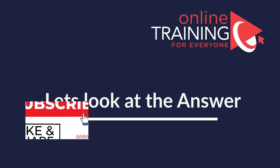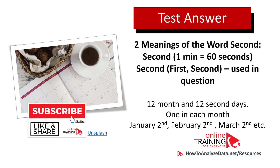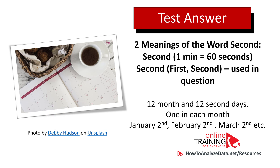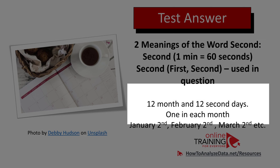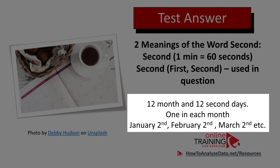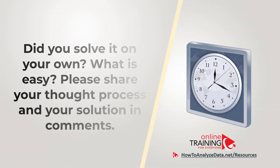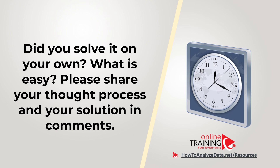Let's get to the correct solution together. This is a tricky question that tests your understanding of the word 'second.' There are two meanings: one is a unit of time — one minute has 60 seconds — and the other is a position in a sequence, like 'first and second.' The second meaning is used here. In a year there are 12 months, and there are 12 'second' days — January 2nd, February 2nd, March 2nd, and so on. So the answer is 12.